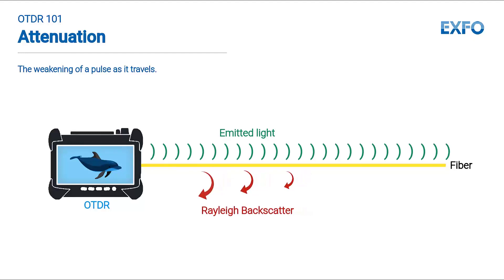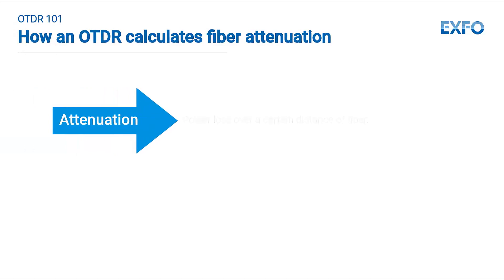The pulse becoming weaker will result in weaker backscattering. Comparing this difference in power received at various points, the OTDR can calculate the attenuation. So as you can now tell, attenuation is calculated, not measured. Backscatter is measured as a function of time, translated into power variation as a function of distance. A power loss over a certain distance of fiber is called attenuation. Fiber optic attenuation refers to the loss of signal strength as light travels through an optical fiber.